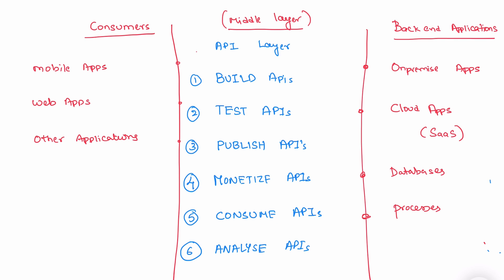So these are the six steps in API lifecycle management. The six steps are: build, test, publish, monetize, consume, and analyze.